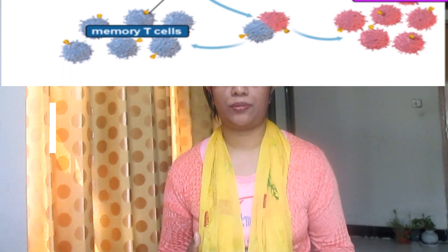Other T cells seek out and kill any of the body's own cells that are infected with pathogens. To do this, they must make direct contact with infected cells. That's all — thank you very much. Don't forget to subscribe and share with your family and friends.